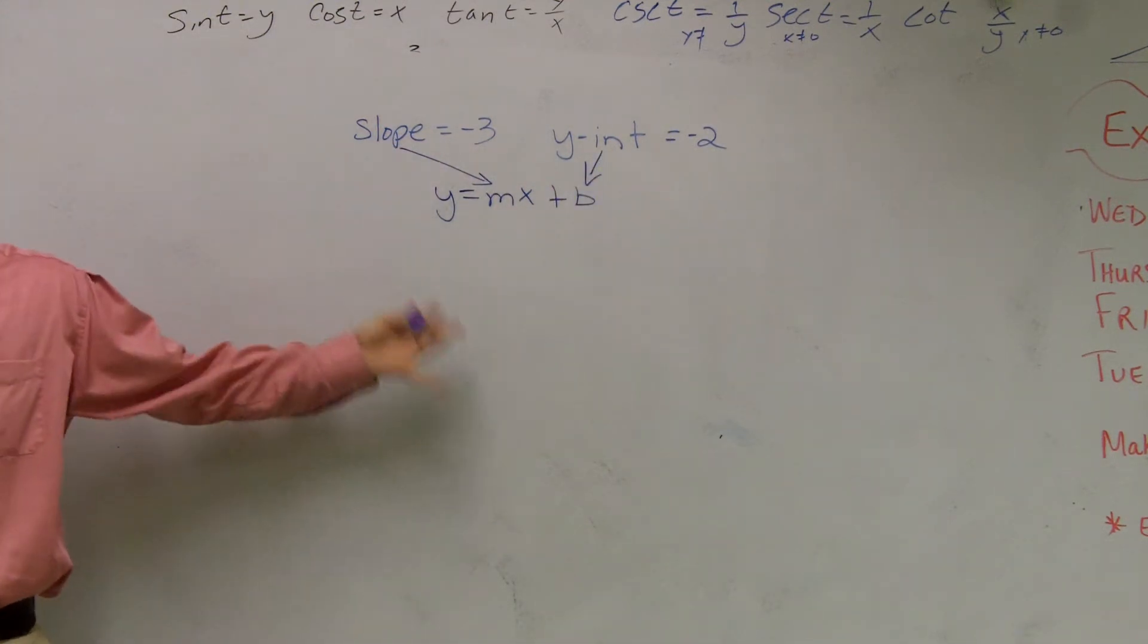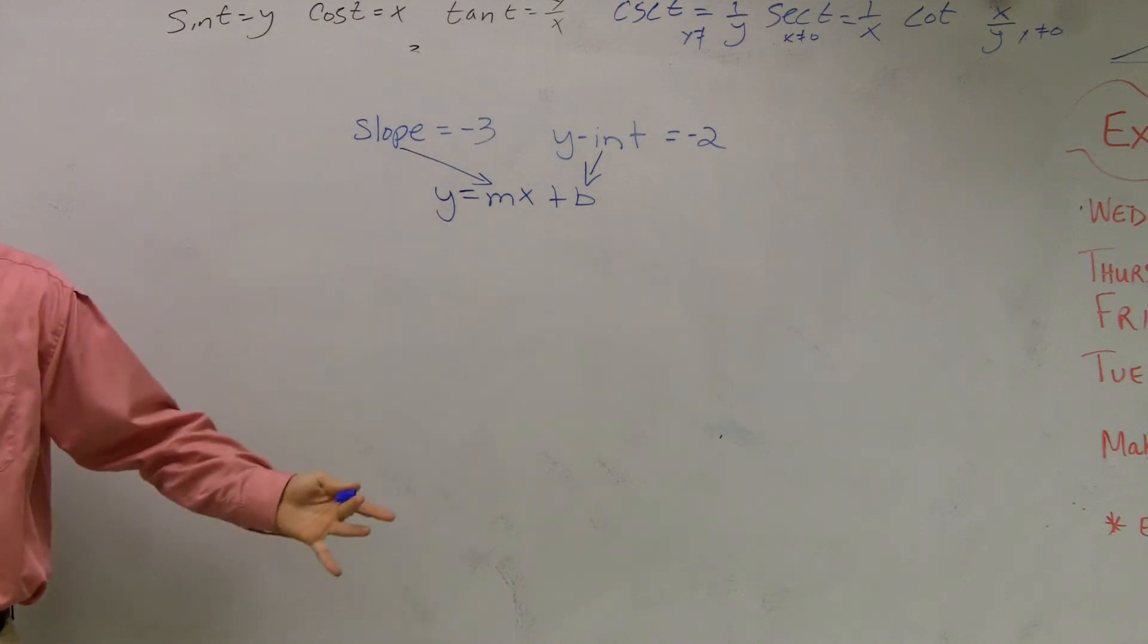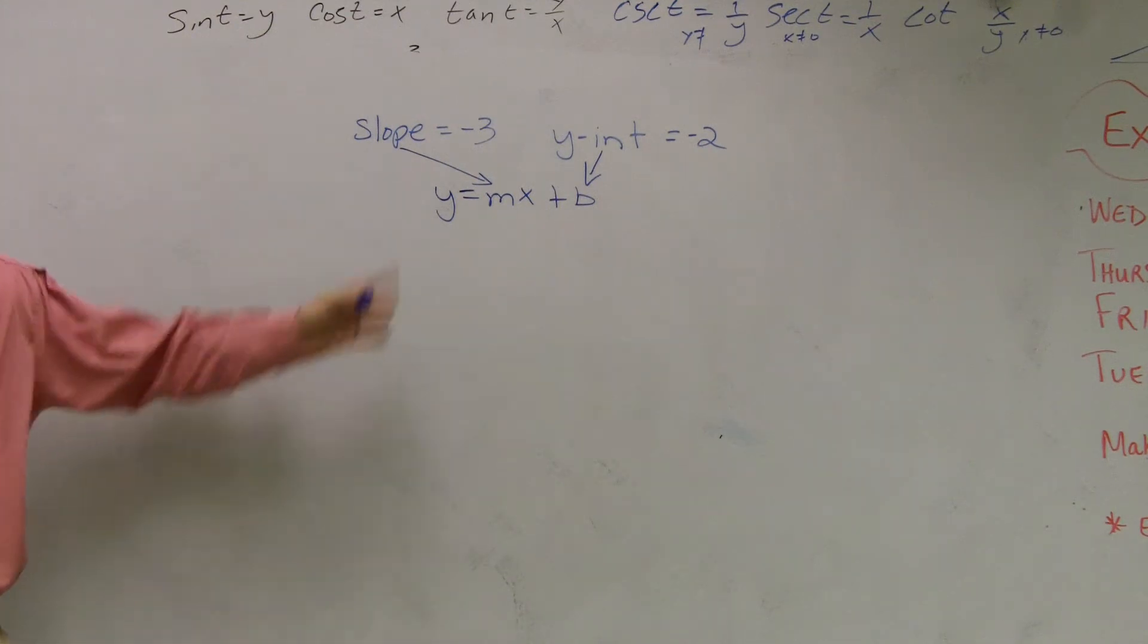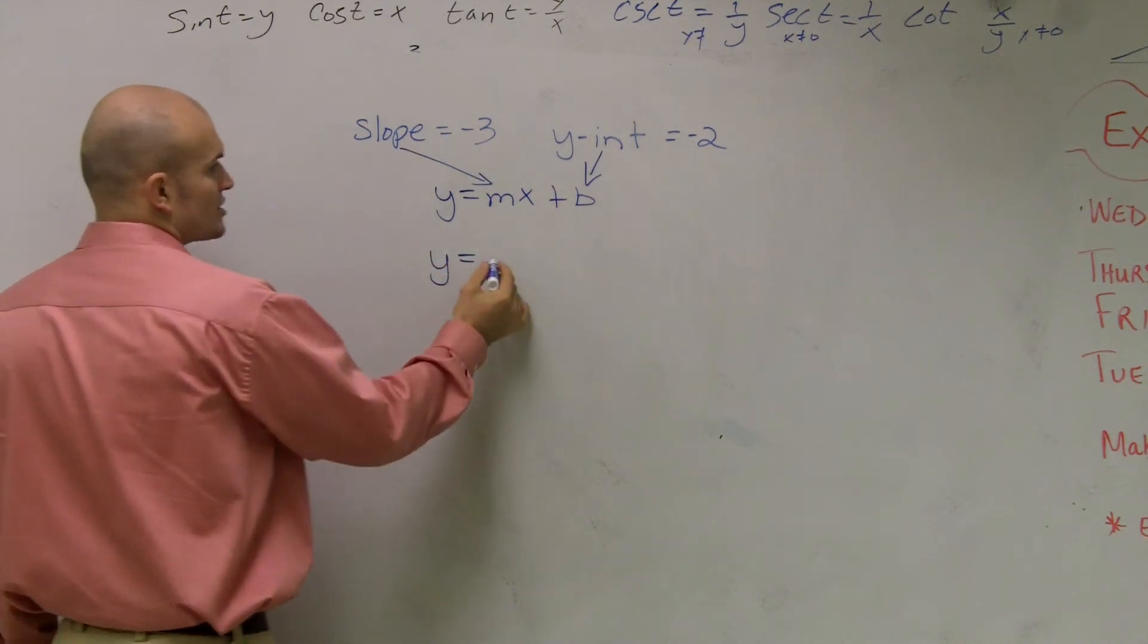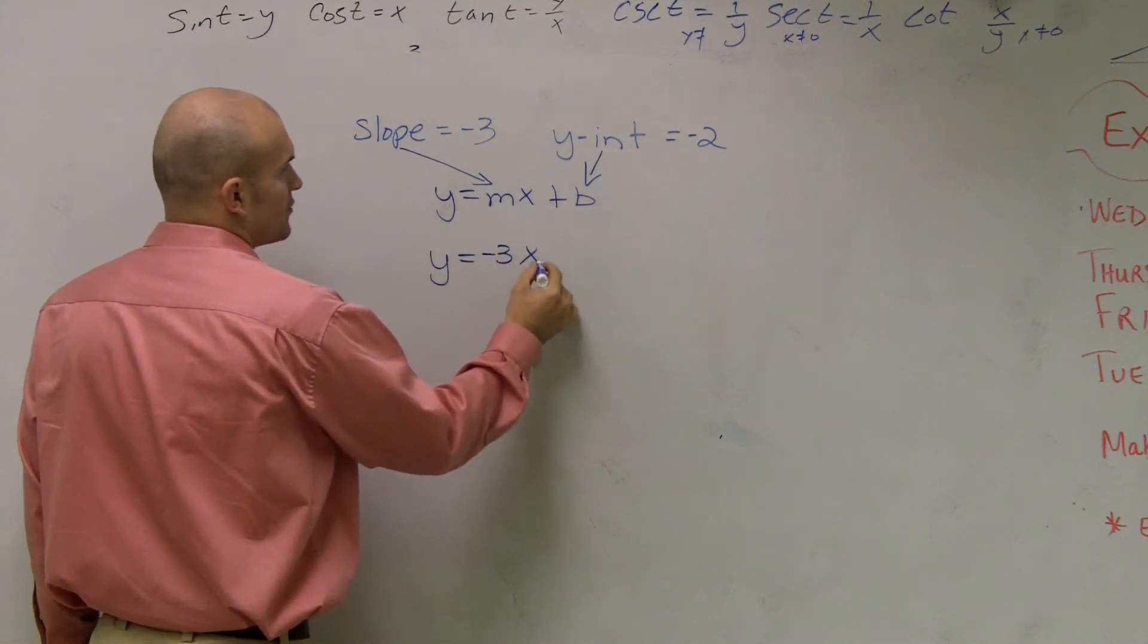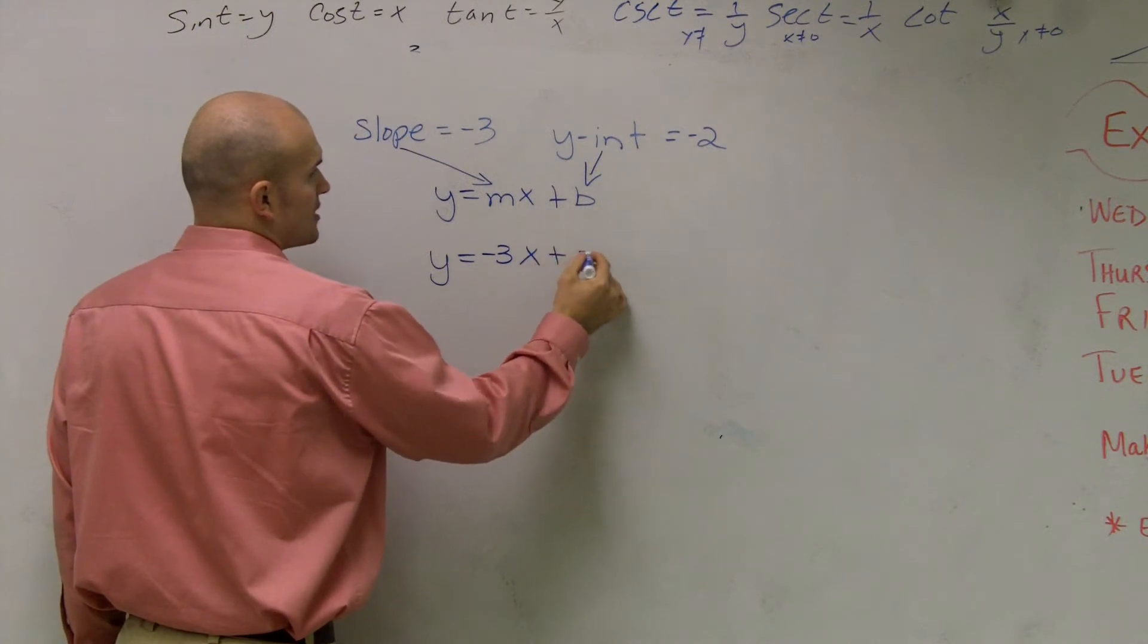So if I want to write an equation in slope-intercept form, and I know what the slope is, and I know what the y-intercept is, you just plug those values in for your equation. So slope-intercept form of this equation is going to be y equals negative 3x plus negative 2.